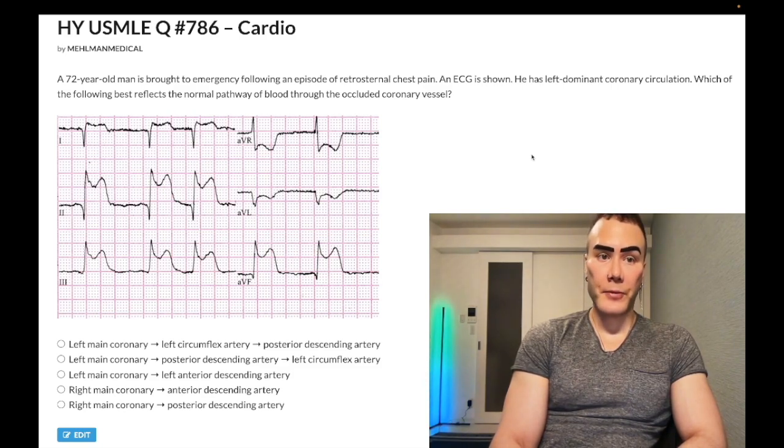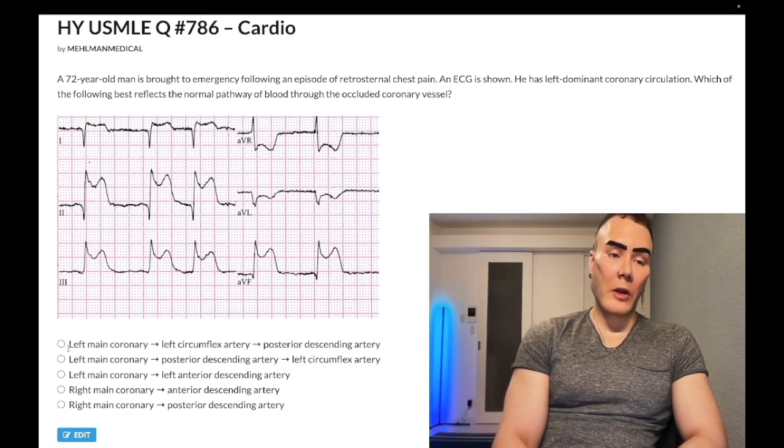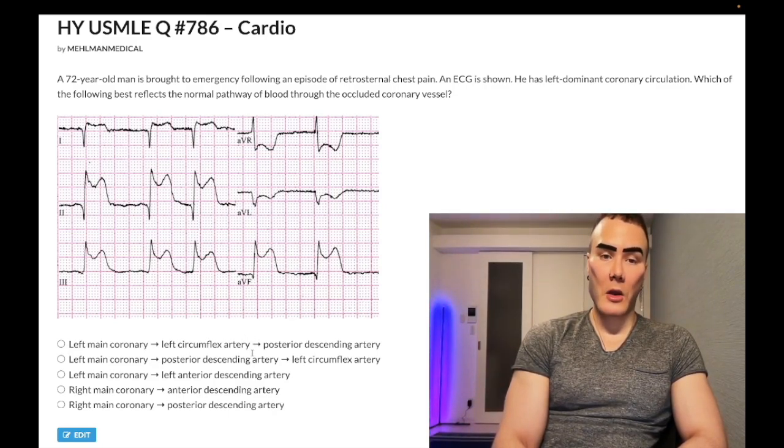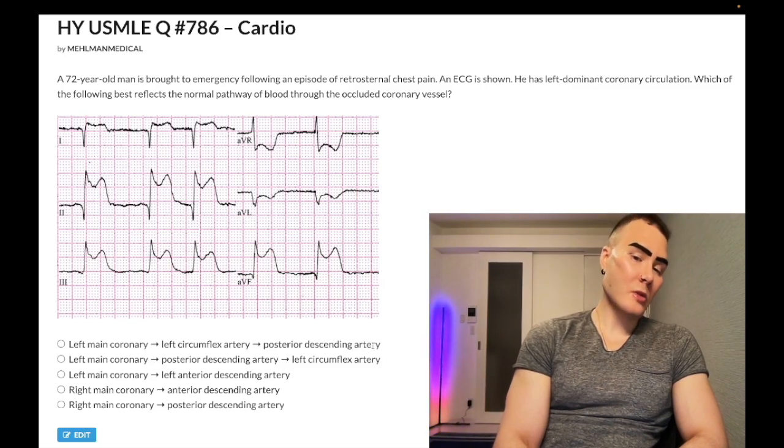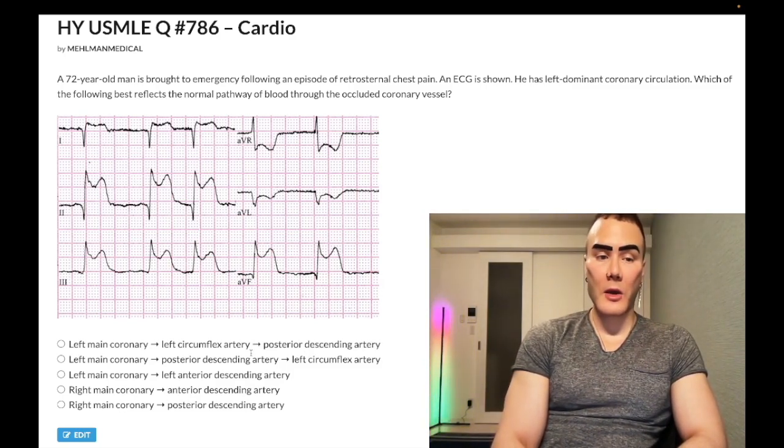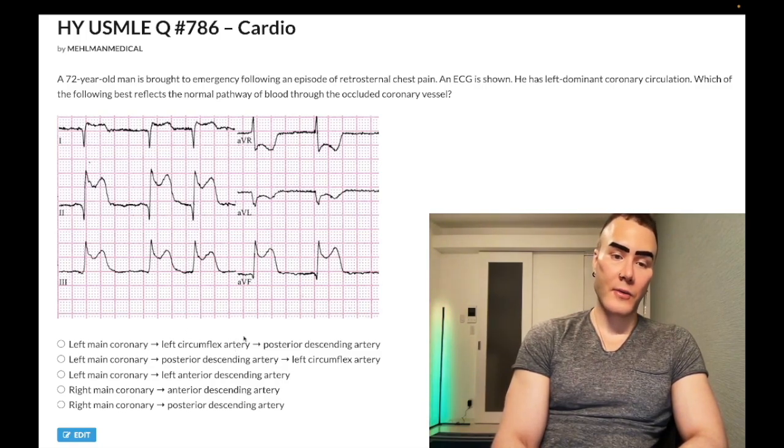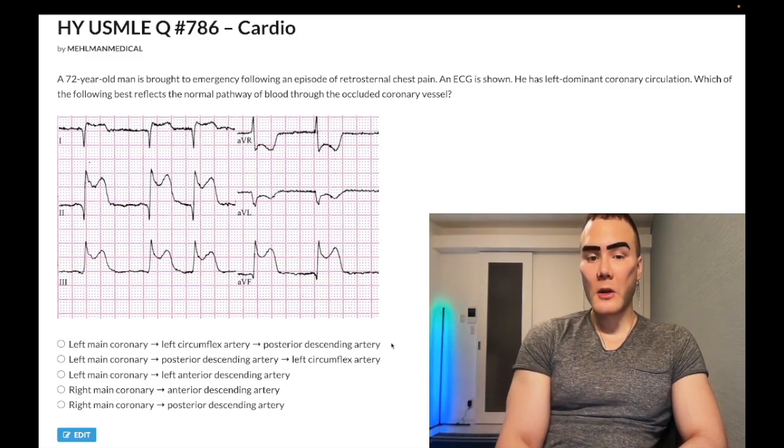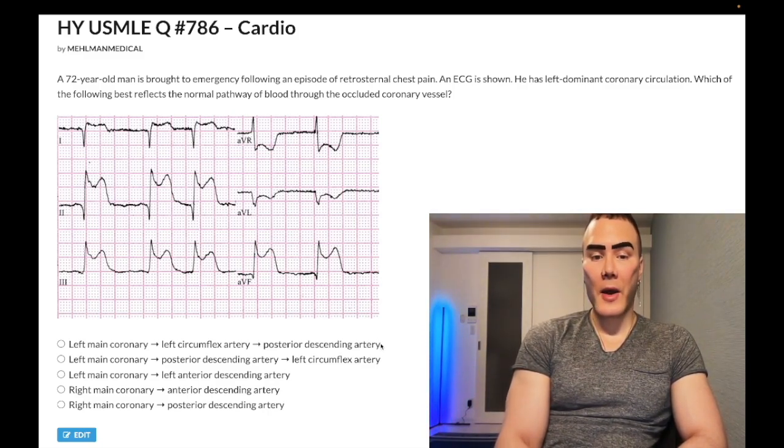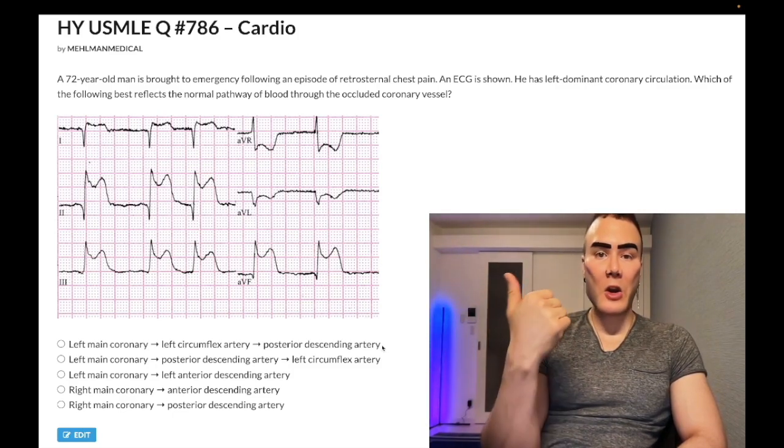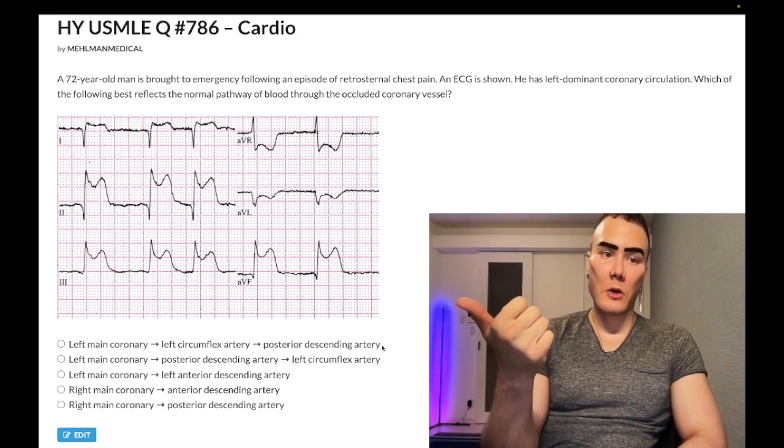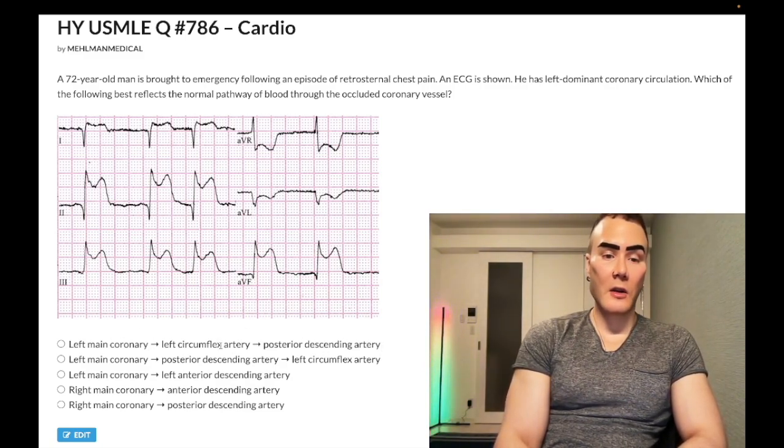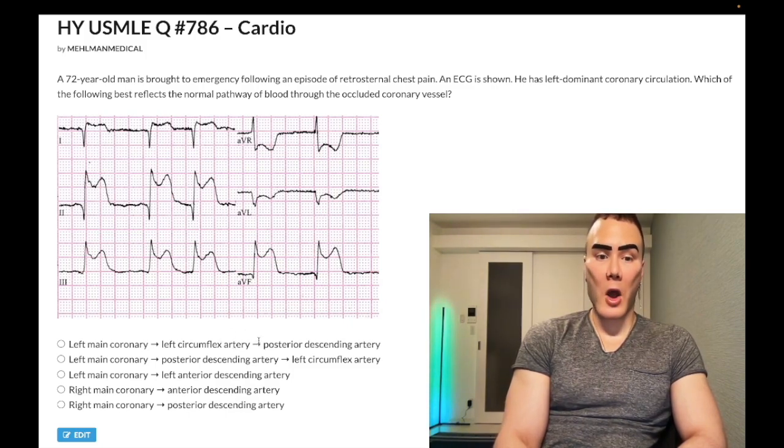But there's a question on one of the offline NBMEs where they pretty much the same question. And they just give you left dominant circulation and they want you to know that there's an infarct in the PDA, that there's an inferior MI. And when we look at choices A versus B here, and you say, well, am I supposed to know this nitpicky anatomy? Like how was I supposed to know that specifically the pathway is left main coronary to left circumflex to PDA? That sounds hard. Well, my response is the diaphragmatic surface is supplied by the posterior descending. That's the end point. We know that that's our end point. And we know that our starting point is left main coronary. So left circumflex just conveniently fits in the middle.